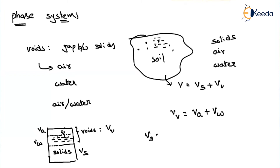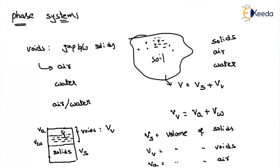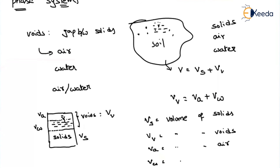So here, Vs is nothing but volume of solids. V subscript V represents the volume of voids present in the soil. V subscript A is nothing but volume of air present in the soil. V subscript W is nothing but volume of water. So if you want the total volume of the soil, that will be represented as volume of solids plus volume of voids. Now let us see some of the basic definitions and properties of the soil.